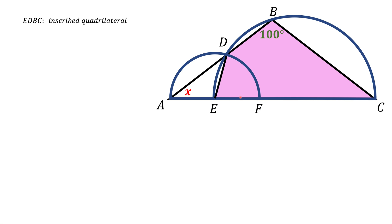And we know that a quadrilateral is inscribed if and only if the sum of the opposite angles is 180 degrees. So the sum of angle B and angle E here should be 180 degrees. And that means angle E should be 80 degrees.